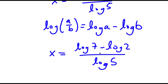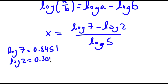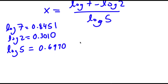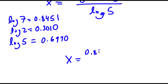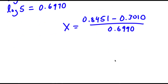So now that this is all simplified, all we need to do is plug in the values of log 7, log 2, and log 5. So log 7 is equal to 0.8451, log 2 is equal to 0.3010. So I have x is equal to 0.8451 minus 0.3010, and I have this over 0.6990. So if we simplify all of this, we get that x is equal to 0.7784.